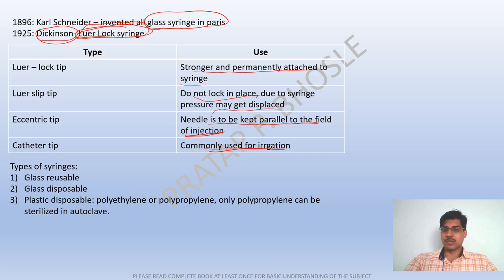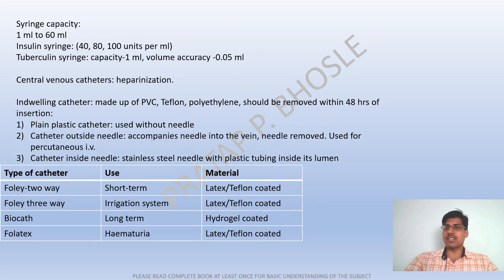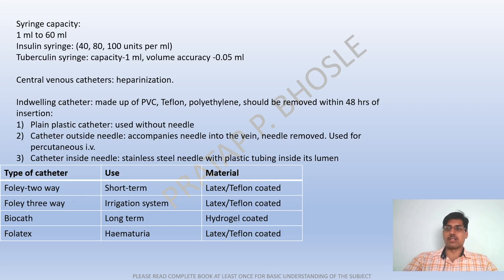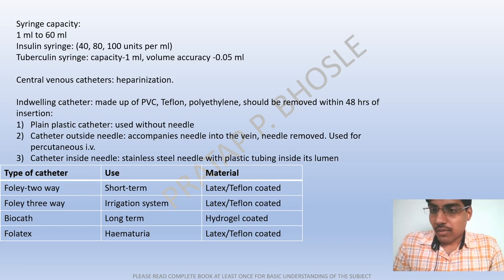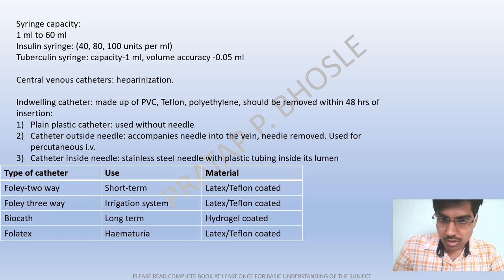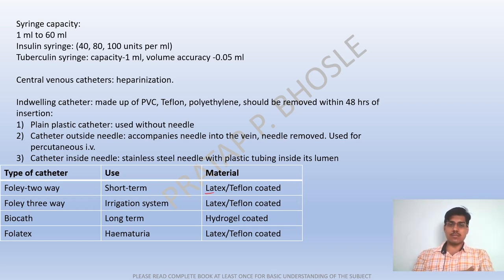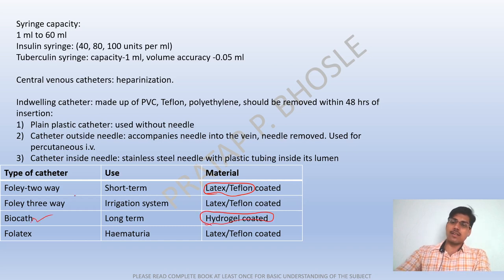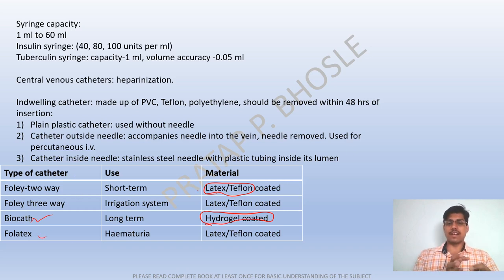Types of syringes: glass, disposable plastic. Syringe capacities range from 1 to 60 ml. Insulin syringe: 40, 80, and 100 units per ml. Tuberculin syringe: 1 ml. Indwelling catheters are made of PVC or Teflon. Foley 2-way catheter is for short-term use in latex or Teflon. Foley 2-way, Foley 3-way, and Foley X types are available.